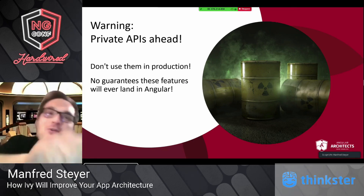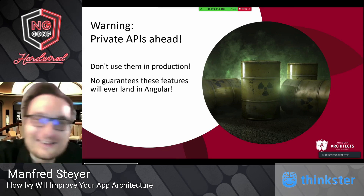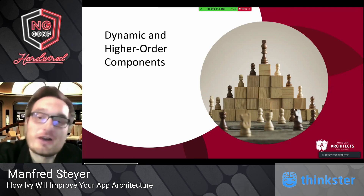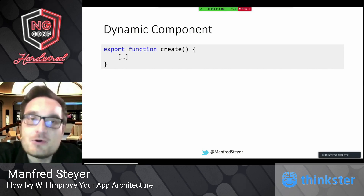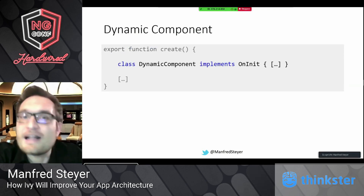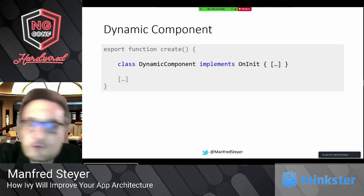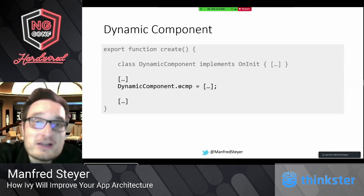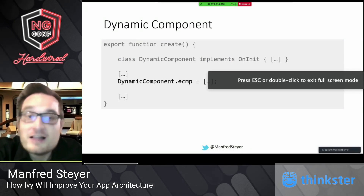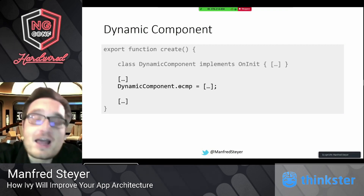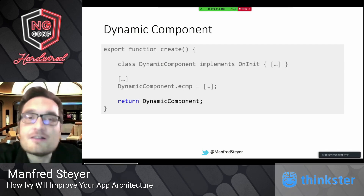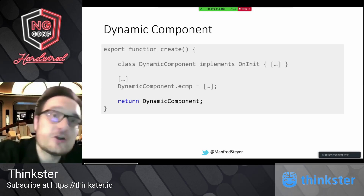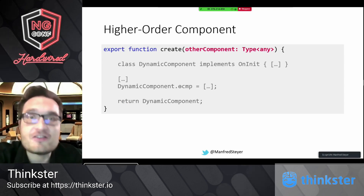Let's get started with dynamic and higher-order components. If you look at this function creating a dynamic component, with Ivy we just need to create a class on the fly using TypeScript and JavaScript. Then all we need to do is add a property — like what Ivy would add at compile time — specifically the component metadata property. When we return this component, it can be used like any Ivy-based component.